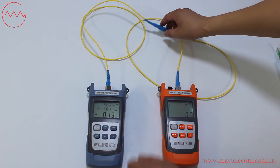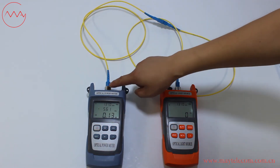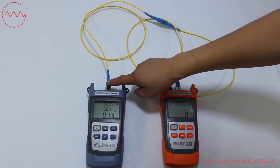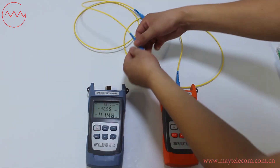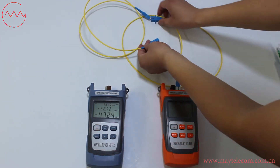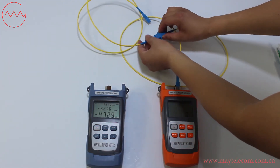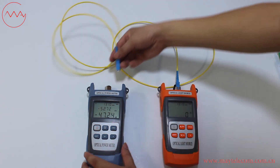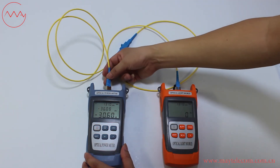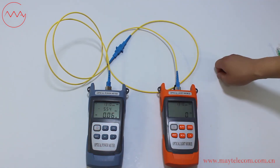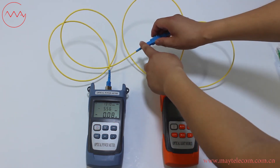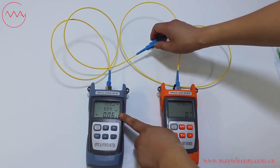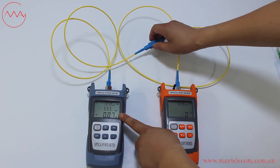If we want to test the insertion loss of the other connector, we need to switch the connectors. The insertion loss of that connector is 0.06 dB.